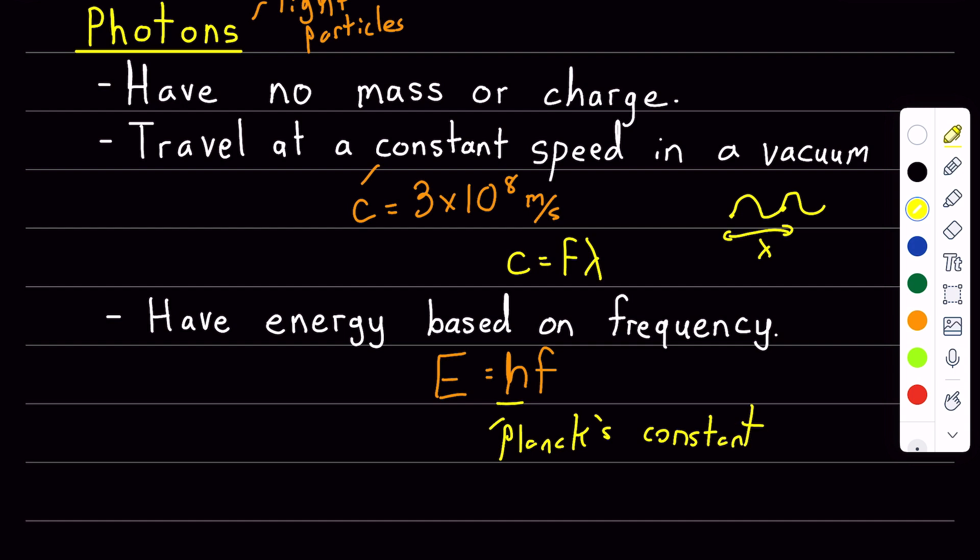And this variable h basically leads to the fact that energy is quantized, which means that it can only occur at certain discrete amounts.